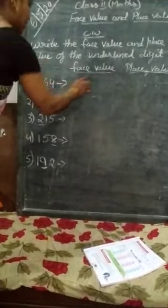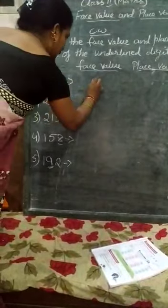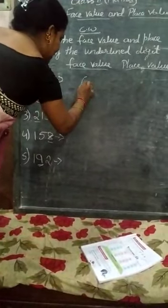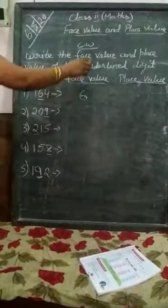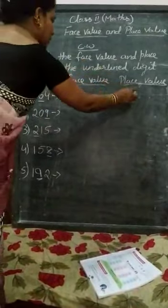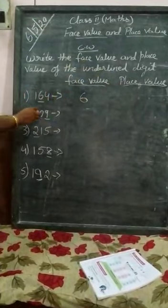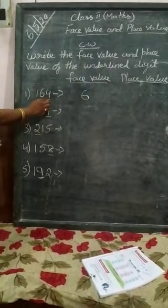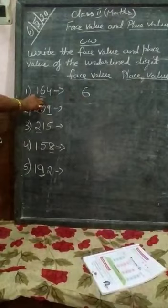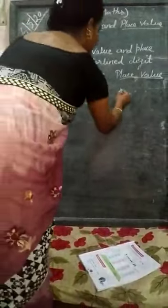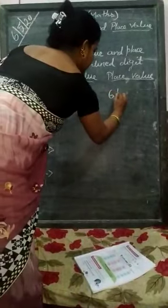Students, your Place Value will be 6. What will it be? 6. And the Place Value of 6 is in the 1's and 10's place. So, what will it be? 6 tens.